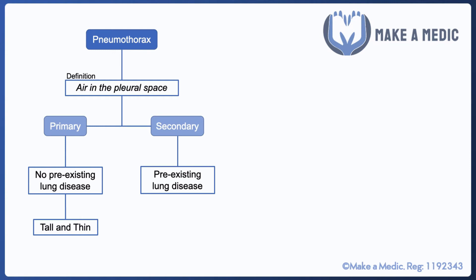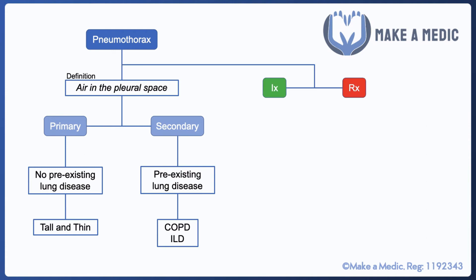Generally speaking, especially when it comes to exam questions, patients who have primary pneumothorax tend to be tall and thin, whereas secondary pneumothorax occurs in the context of some other respiratory illness such as COPD or interstitial lung disease.